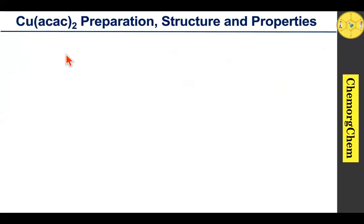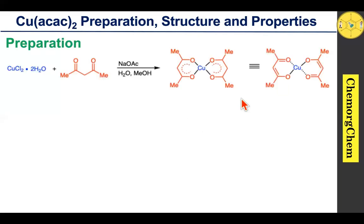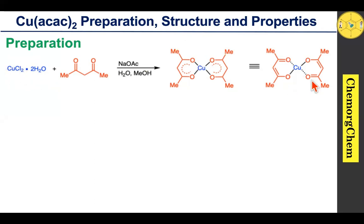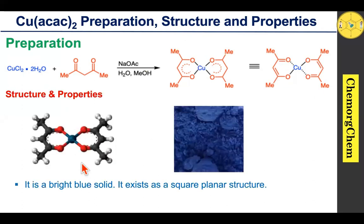So let's move on to copper acetylacetonate in organic synthesis. First we are going to see how you prepare copper acetylacetonate and its structure and properties. In the preparation, when you take copper chloride dihydrate with acetylacetone in the presence of sodium acetate, it readily produces the copper acetylacetonate complex. Instead of copper chloride, if you take copper sulfate or copper nitrate, those also produce the corresponding copper acetylacetonate complex. In its structure, the complex is present in the square planar form and its color is bright blue solid.